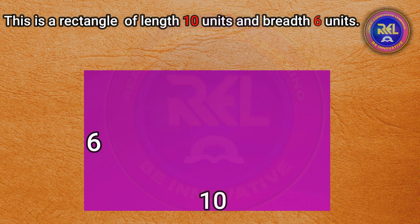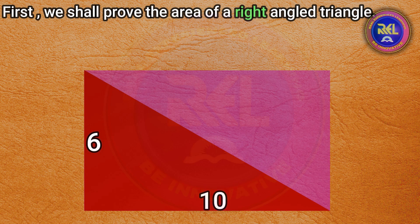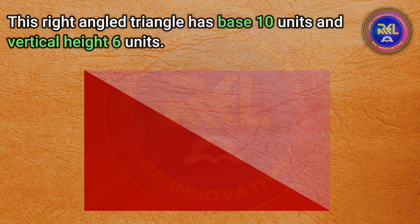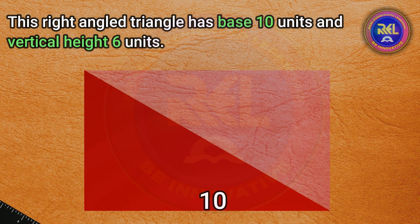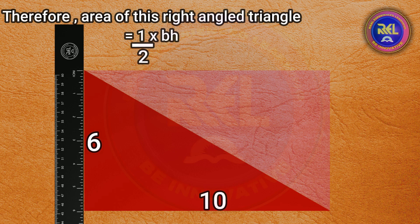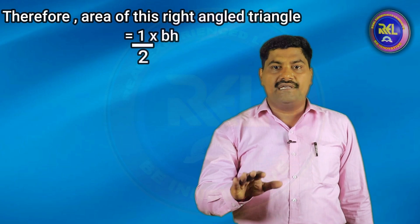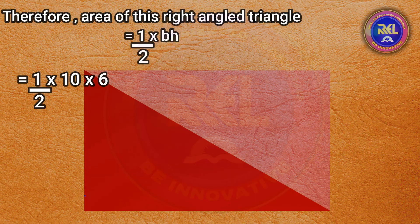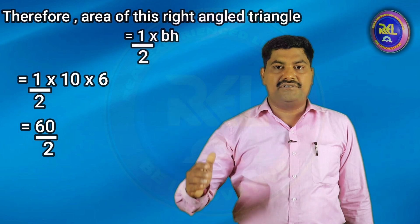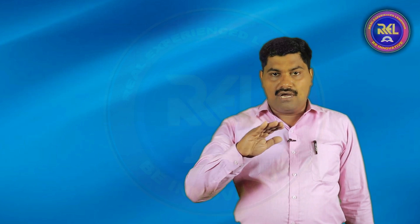First we shall prove the area for a right angle triangle. This right angle triangle has base 10 units and vertical height 6 units. Therefore, area of this right angle triangle is equal to half B H, equal to half into 10 into 6, equal to 60 by 2, equal to 30 square units.